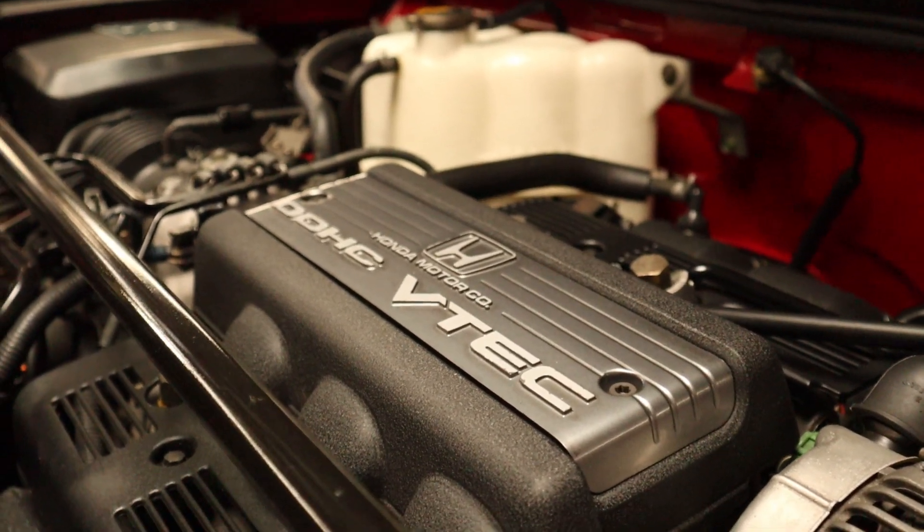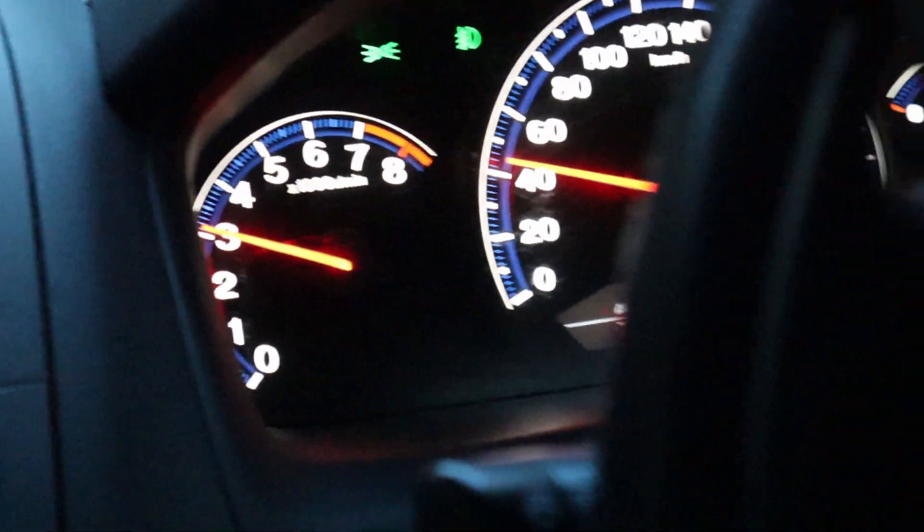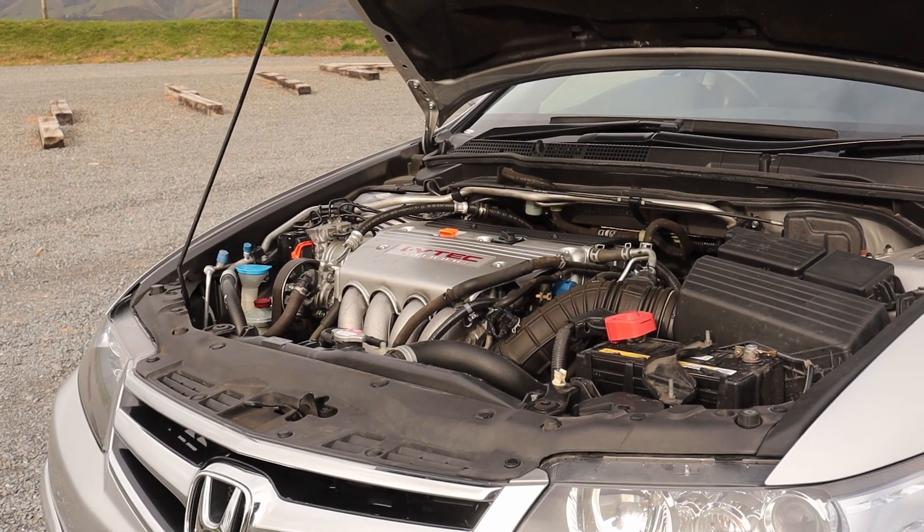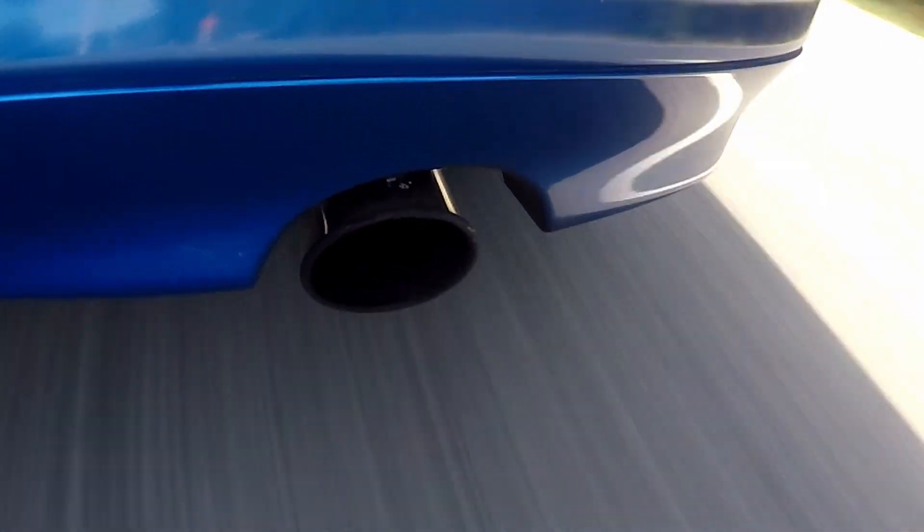First, a little history. VTEC was launched in 1989 with the Honda NSX, and if you click up there you can see my review of one. In essence, Honda wanted to create two engines in one. At low RPM you had a small, efficient engine for taking your girlfriend home after a nice date. And then at high RPM you had a fire-breathing monster!